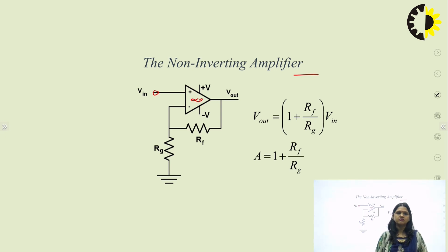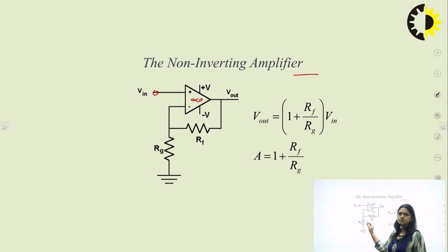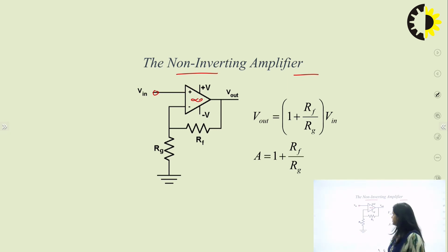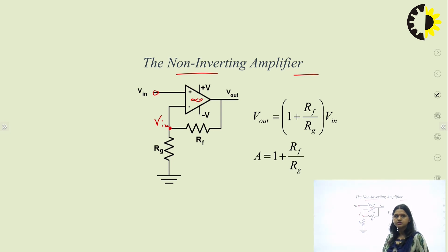To reduce the gain for practical amplification, we apply negative feedback. Rf and Rg represent the negative feedback network which reduces the gain of this amplifier. The name 'non-inverting' is because input is applied at the positive terminal. The feedback should always be at the negative terminal. According to virtual short circuit concept, the potential at the inverting node equals Vin, and the current going into the Op-Amp is zero.